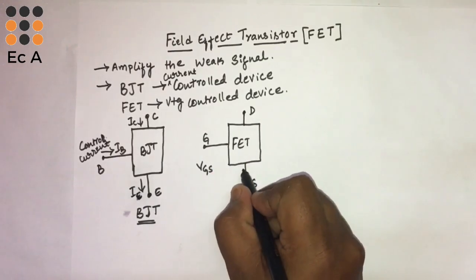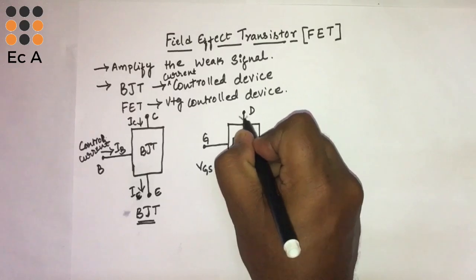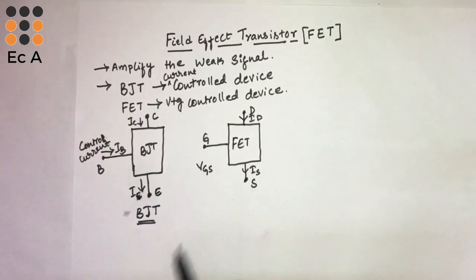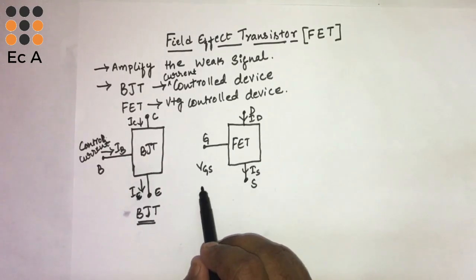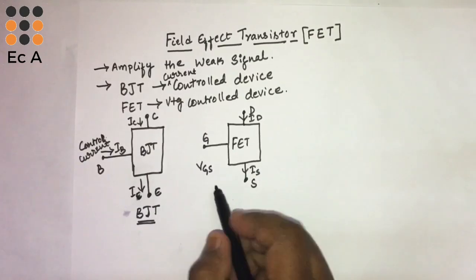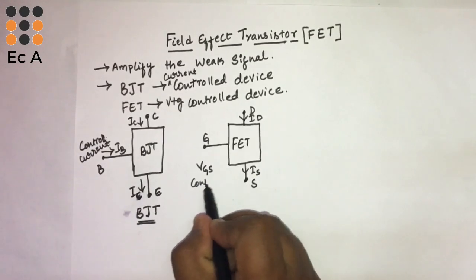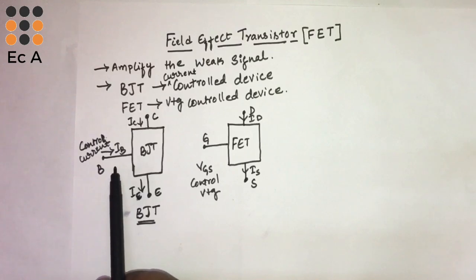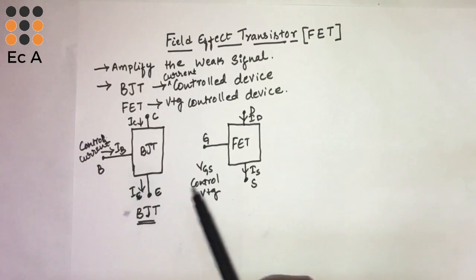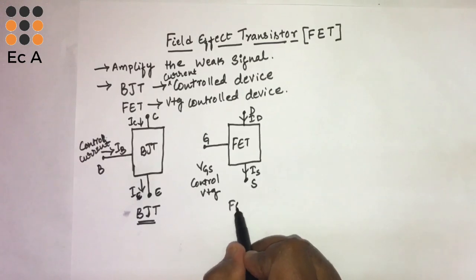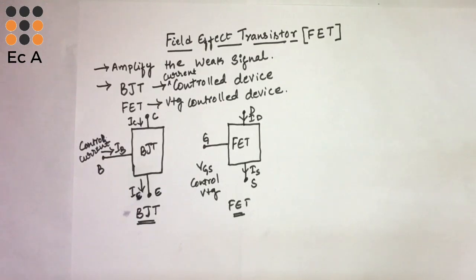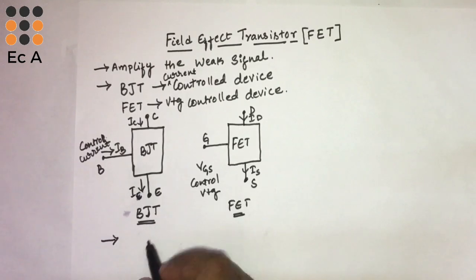In FET there are three terminals: source, drain, and gate. The source current IS and drain current ID are controlled by using a voltage between gate and source, which we specify as VGS. This voltage is used to control the current flowing through the FET, that is why we call this the control voltage. So in BJT, base current controls the device current, and in FET, the gate-to-source voltage VGS controls the flow of current.